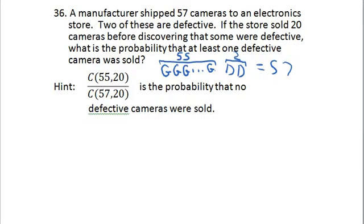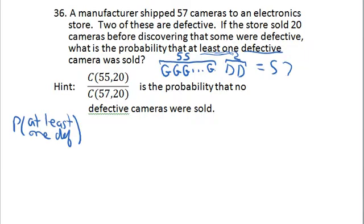The problem wants to know the probability that at least one is defective. As we know from the complement rule, the probability of at least one of something happening is one minus the probability that none occur. So the probability of at least one defective is one minus the probability that none are defective.